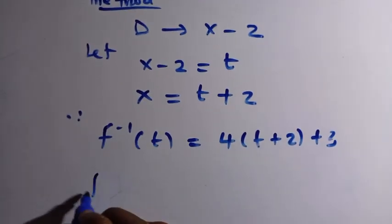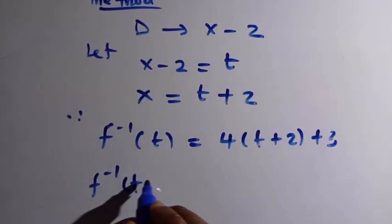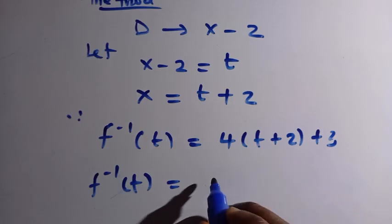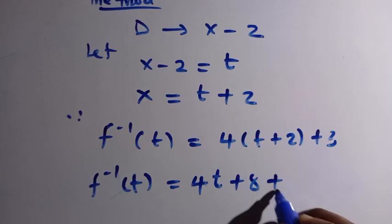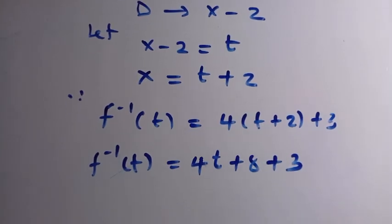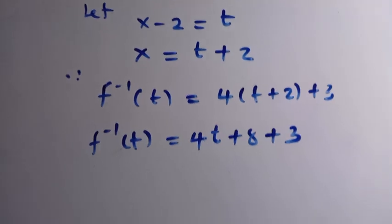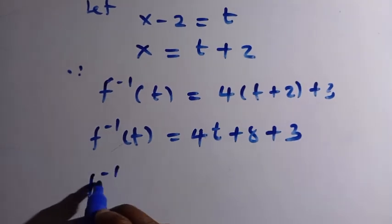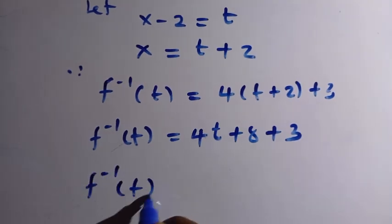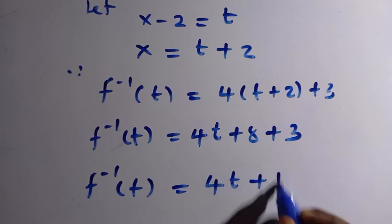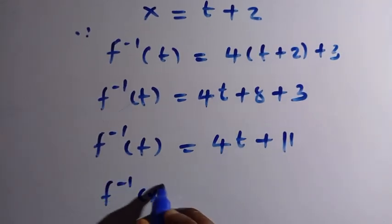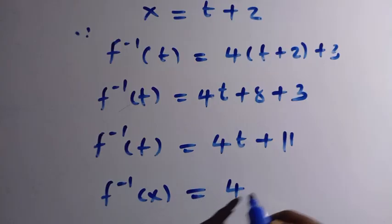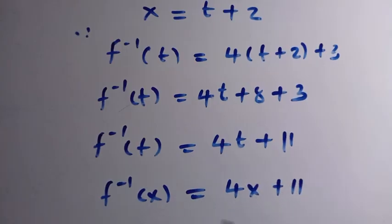Expanding: 4 times 2 is 8, plus 3 gives us f inverse of t equals 4t plus 8 plus 3. Adding 8 and 3 together, we have f inverse of t equals 4t plus 11 — the same result as before. Replacing t with x gives f inverse of x equals 4x plus 11.